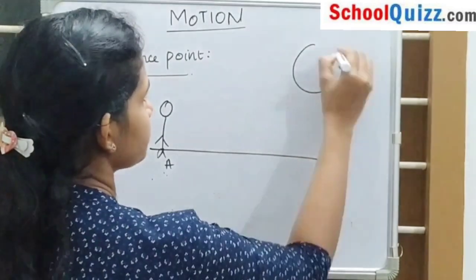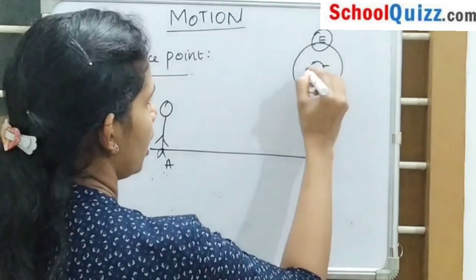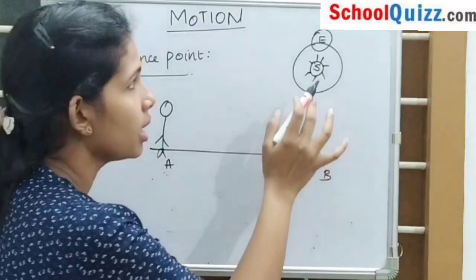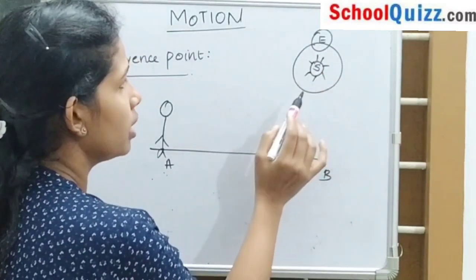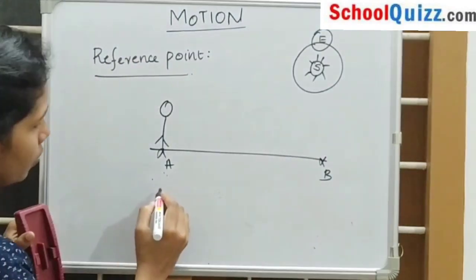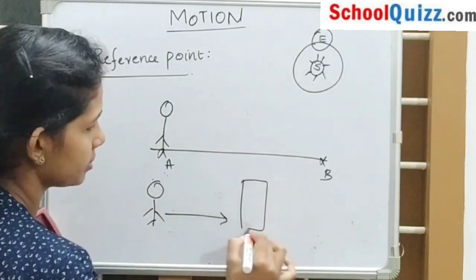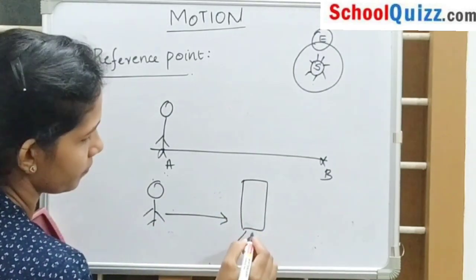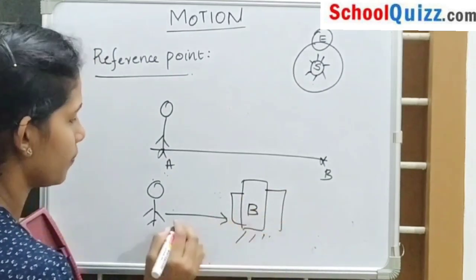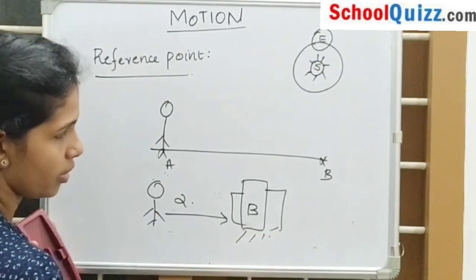In a solar system, Earth is moving around the sun. The sun is a fixed point, so here the reference point is the sun. If we move 2 kilometers from a building, we can say that the building is the reference point.